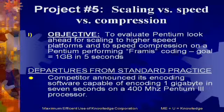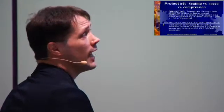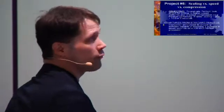Last of the 94 projects: scaling versus speed versus compression. These are illustrating very much the same kind of issues. A competitor announced it could encode one gigabyte of data in seven seconds, benchmarked on a 400 MHz Pentium 3 processor. Because if we change the processor, we're comparing apples and oranges. Our objective is we hypothesize we can take this Pentium look-ahead function and use it to scale to higher speed platforms.